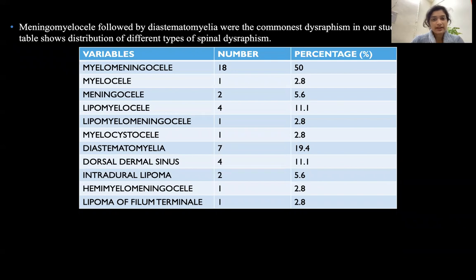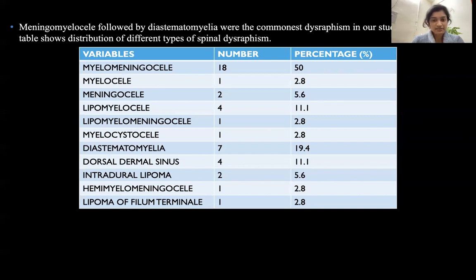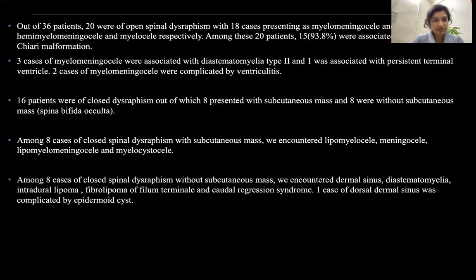Myelomeningocele, followed by diastematomyelia, was the commonest dysraphism in our study. Myelomeningocele accounted for 50% of cases and diastematomyelia accounted for 19.4% of cases. The other anomalies encountered were myelocele, meningocele, lipomyelomeningocele, lipomyelocele, myelocystocele, dermal sinus, intradural lipoma, hemimyelomeningocele, and lipoma of the filum terminale.